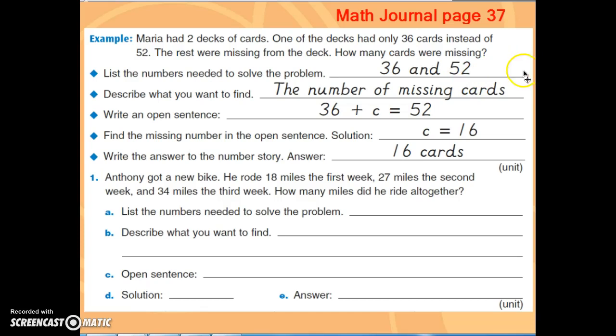Describe what you want to find. Again, we go back to the question, how many cards were missing? We want to find out the number of missing cards. And so if we were to write an open number sentence, we could put 36 plus C, plus something, equals 52.